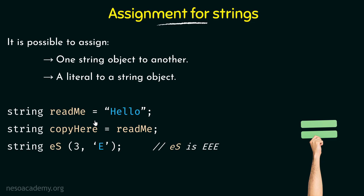here I have a string called readme and to it I am assigning the literal hello, and then I have another string called copy here. To this, I am assigning the string object readme, so whatever is in readme would be copied to copy here as well. I am also declaring another string called es with three comma and within single quotes e, meaning the character e would be stored three times inside this string called es. We can see we are assigning one string object to another, and also a literal to a string object.